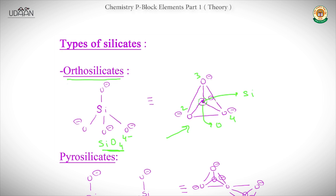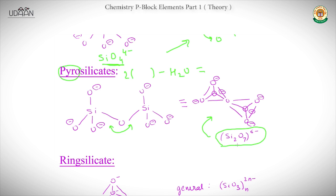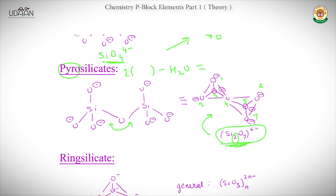Pyrosilicates are formed when two orthosilicate units combine with the loss of one H₂O — this is why the prefix 'pyro' is used. The general formula of pyrosilicate is Si₂O₇⁶⁻. Counting: one silicon plus one silicon gives Si₂, and counting the oxygens: seven oxygens total, giving Si₂O₇⁶⁻.